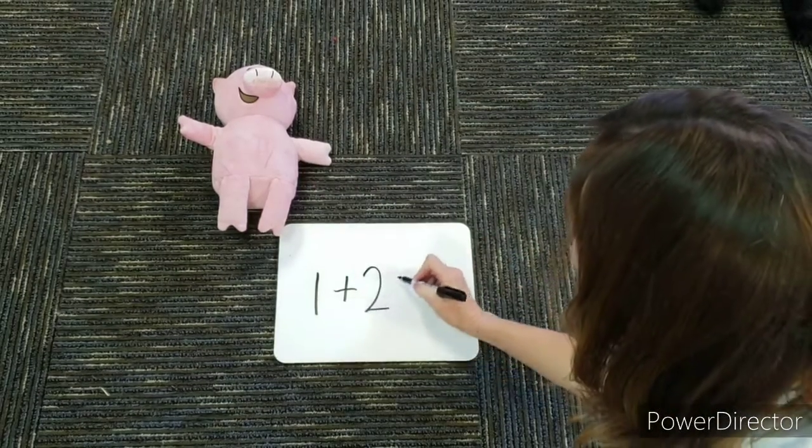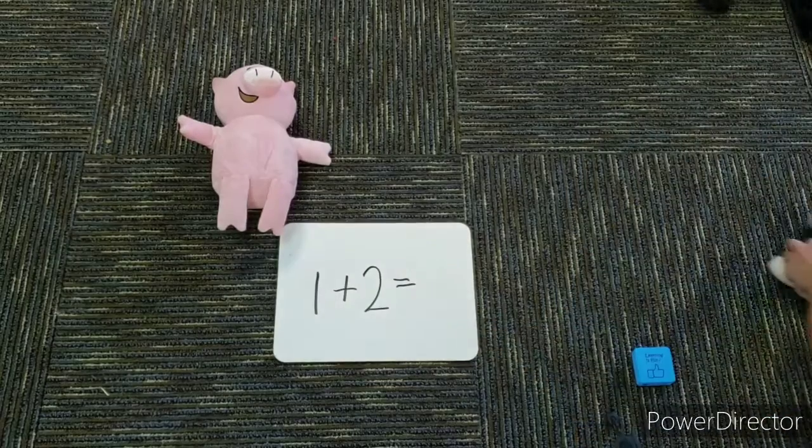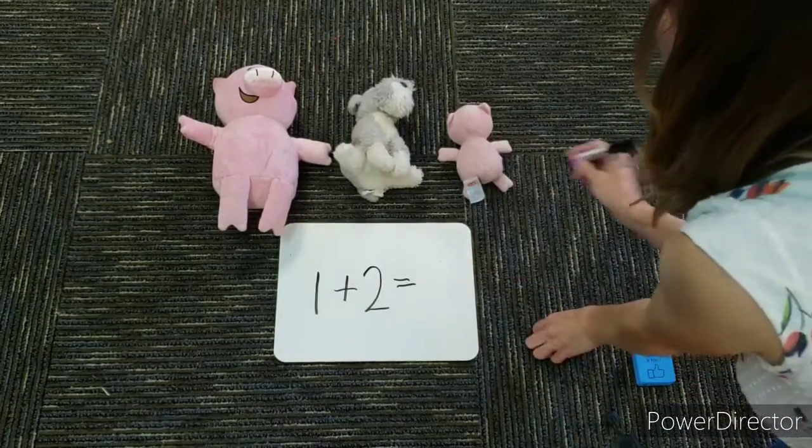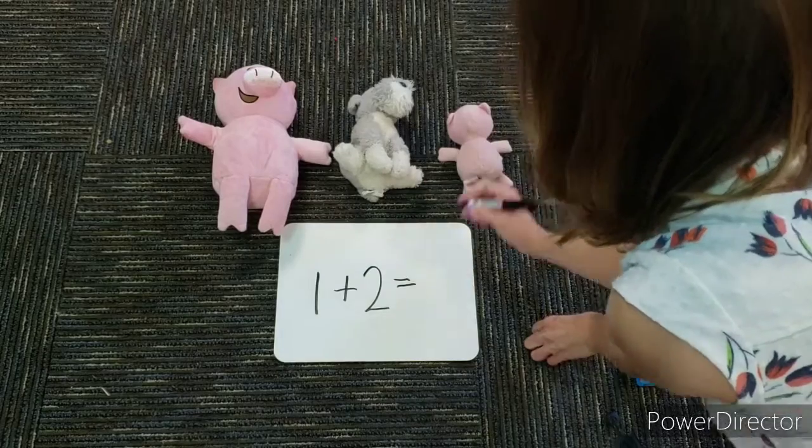I've got one plus two equals, here's my two. Altogether I have one, two, three.